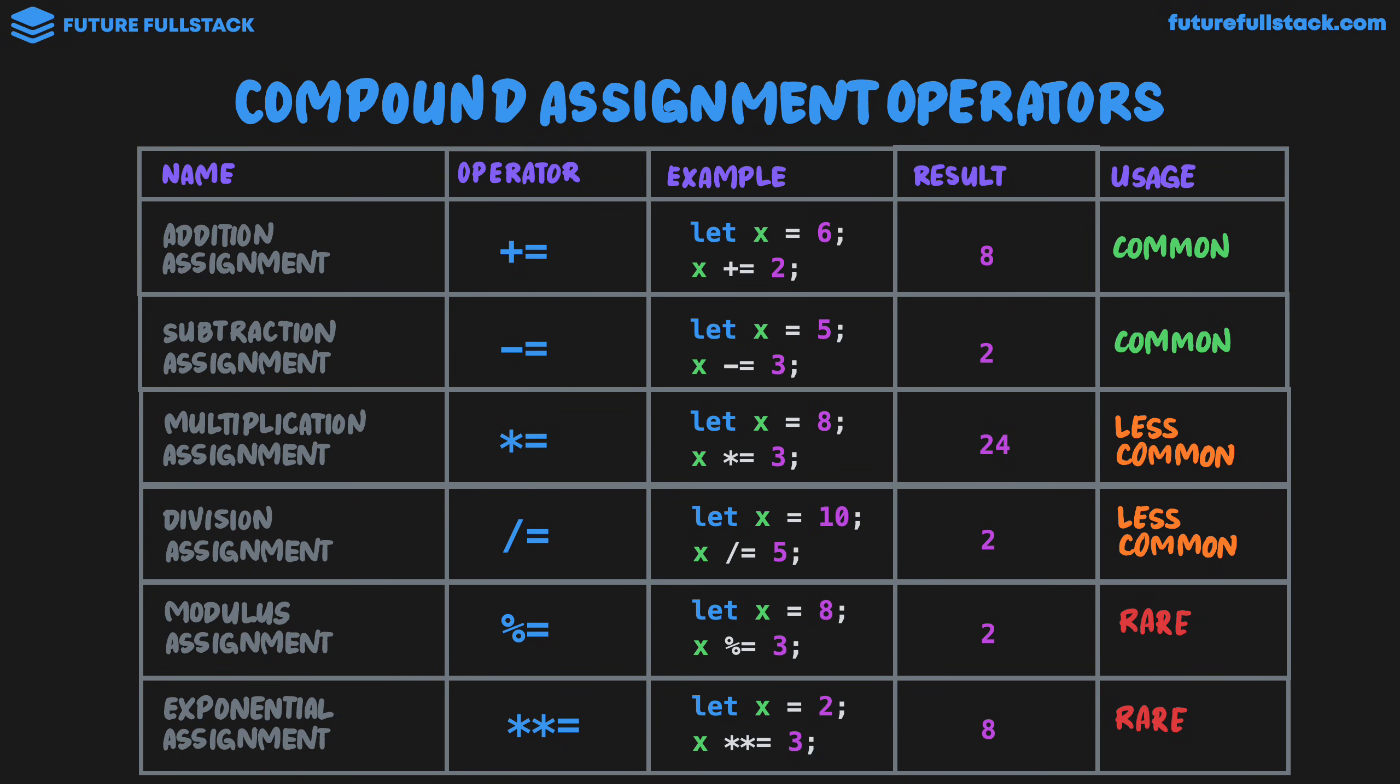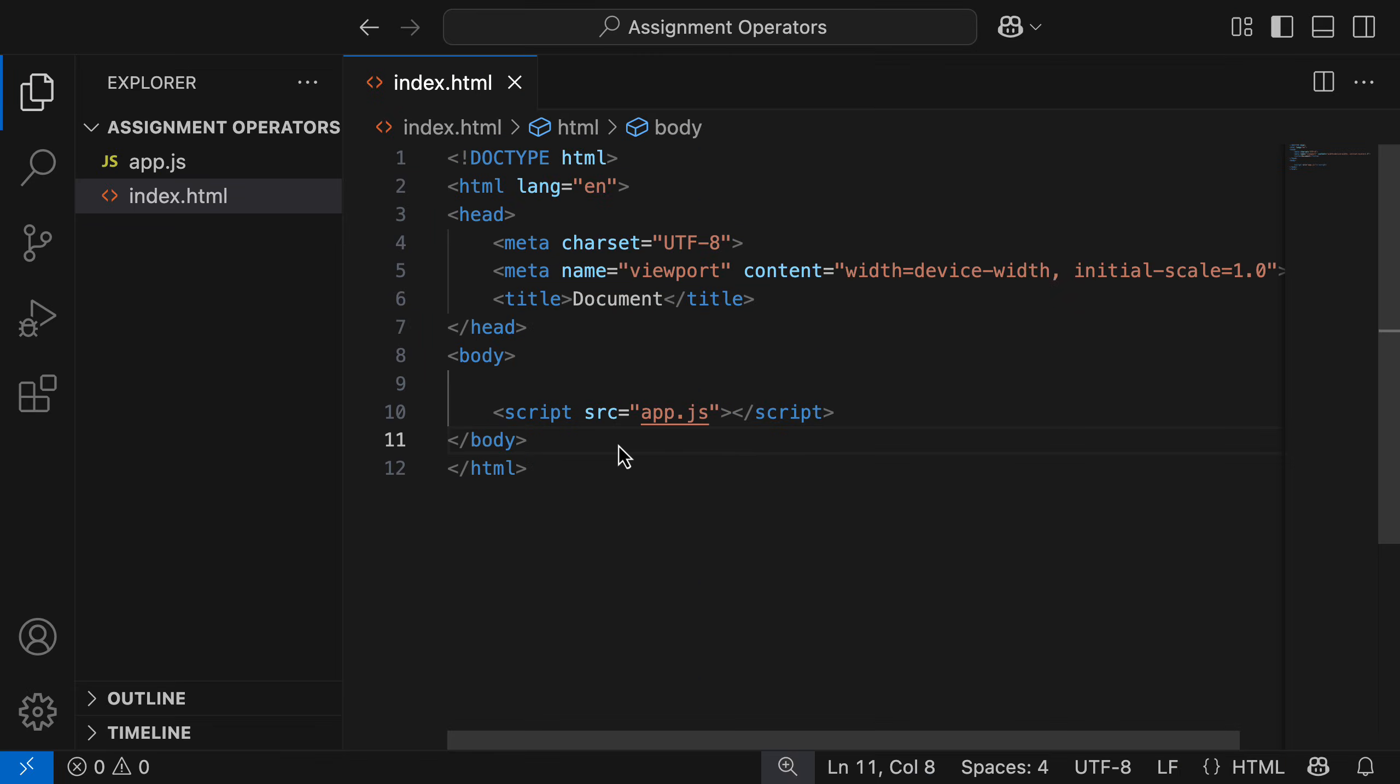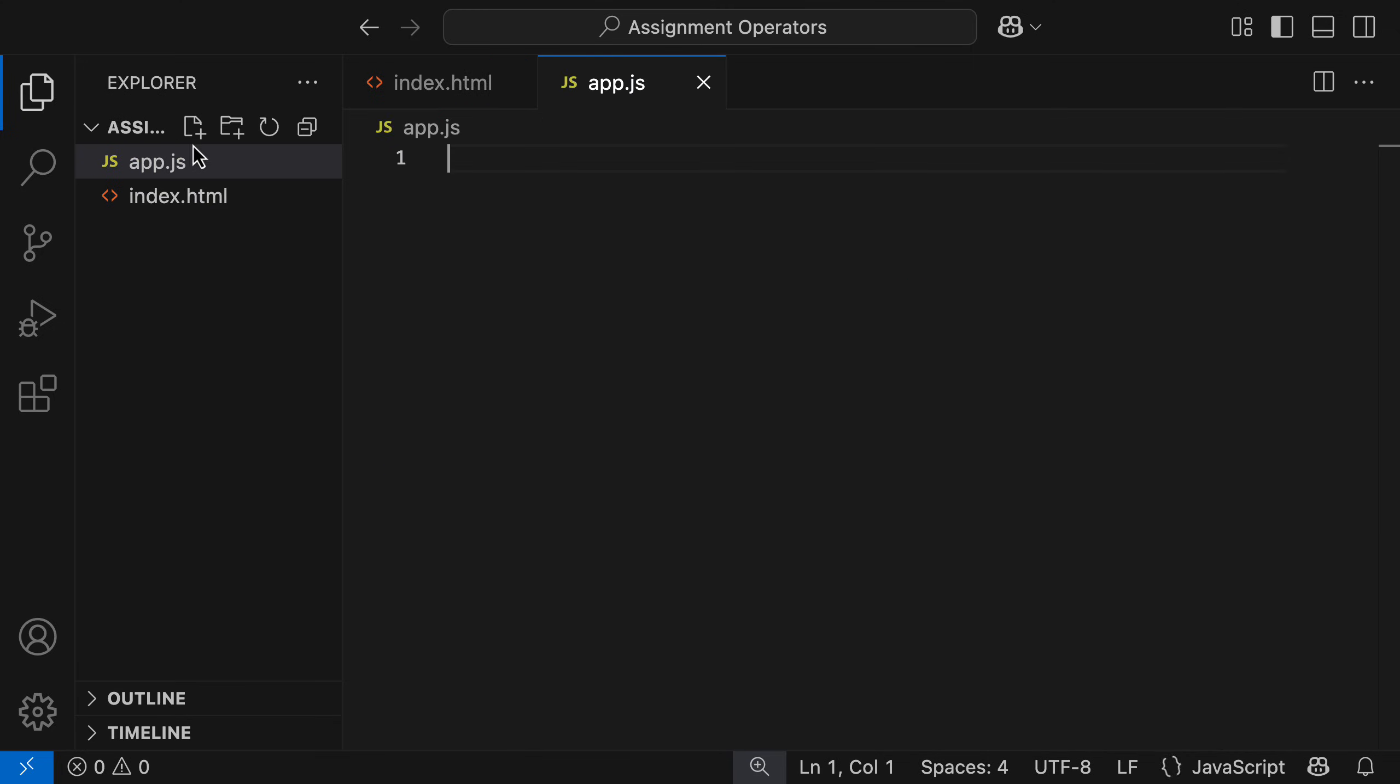Let's go play around with this inside VS Code. All right, so I've gone ahead and set up an index.html file, grabbed the HTML boilerplate, and linked a JavaScript file app.js, which is currently empty.